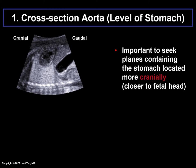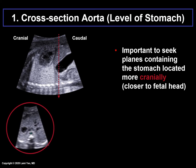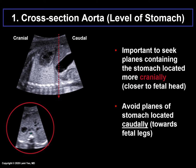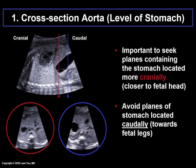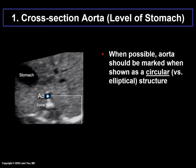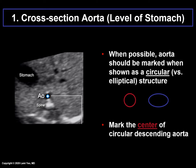It is important to seek planes containing the stomach that are located more cranially, closer to the fetal head, and avoid planes of the stomach located caudally towards the fetal legs. Also, when possible, the aorta should be marked when it is shown as a circular versus elliptical structure. Then mark the center of the circular descending aorta.